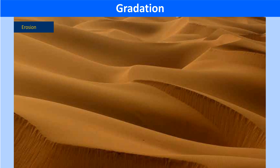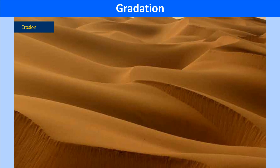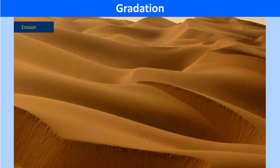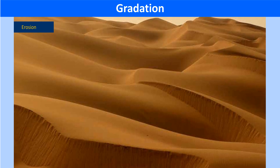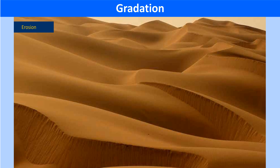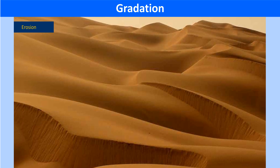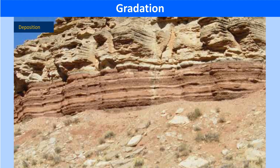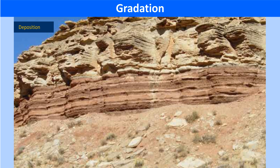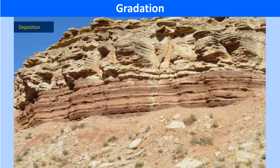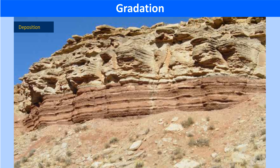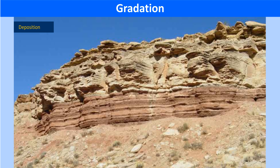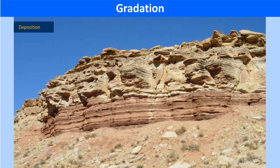Erosion is the process of wearing away of the land surface and its transportation by natural agents like running water, moving ice, wind, action of waves, etc. Deposition is the dumping of rock debris obtained by weathering and erosion in other parts of the earth. The debris after deposition may accumulate to form new rocks.